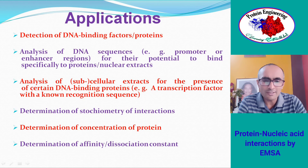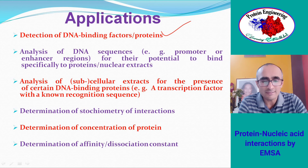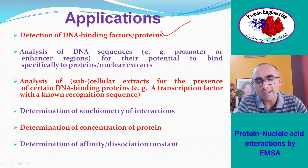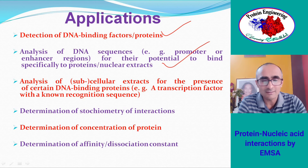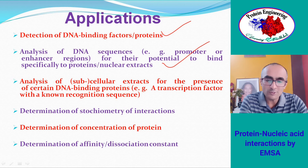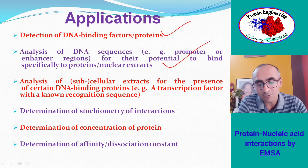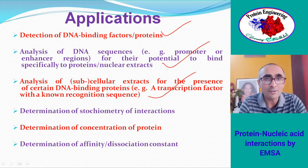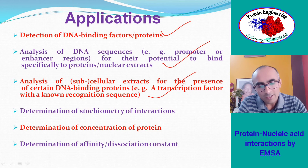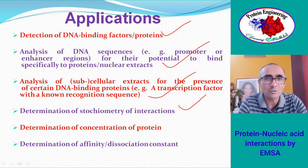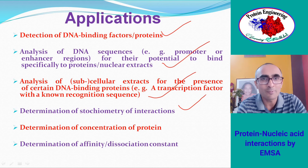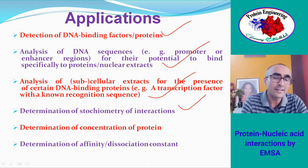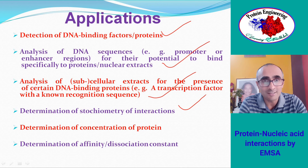Applications of EMSA: it is used to detect DNA-binding or RNA-binding proteins and factors; for analysis of DNA sequences such as promoter and enhancer regions for their potential to specifically bind to proteins or nuclear extracts; and for analysis of cellular extracts for the presence of certain DNA-binding proteins. You can also determine the stoichiometry of interaction — meaning the relative molar ratio of DNA-binding protein to the DNA probe itself, for example whether one probe binds to two molecules of protein or vice versa.